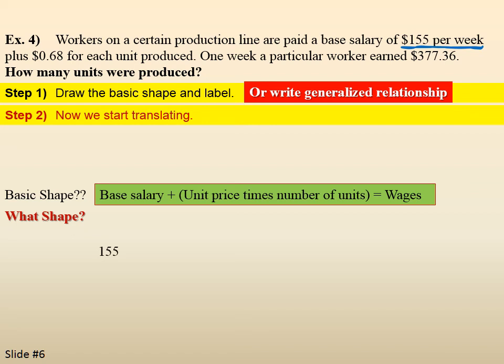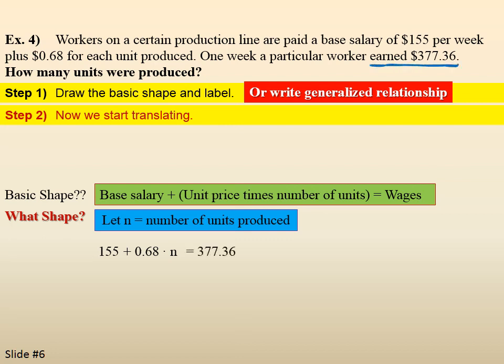Now, we start translating. Well, the base salary is $155. And, we're going to, it's 68 cents for every unit. So, that would be, we'll let n equal the number of units. So, it's 0.68 times n. And, that's supposed to earn $377.36. So, the base salary is $155. For every unit produced, we use n to represent the number of units. They get 68 cents. So, 0.68 times n. And, that's supposed to total $377.36.